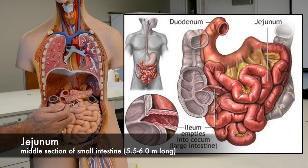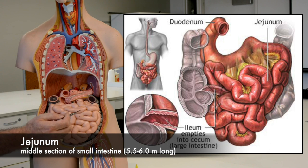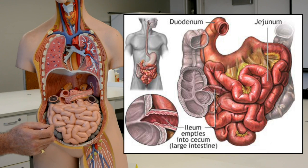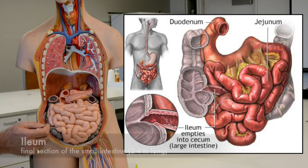Here we can see the duodenum, and it goes along and at some point it becomes the last part of the small intestine, which is the ileum.